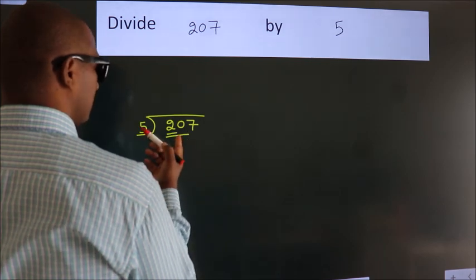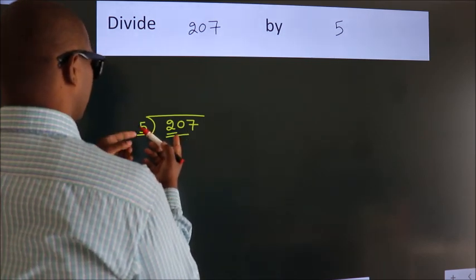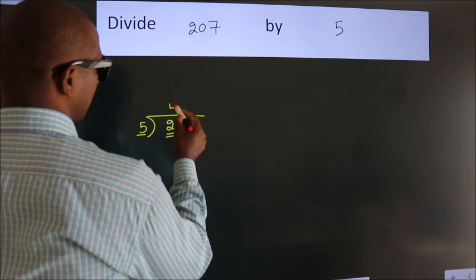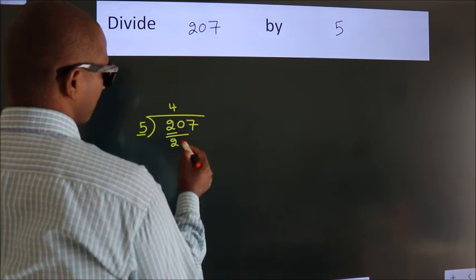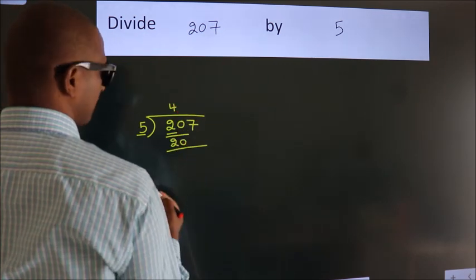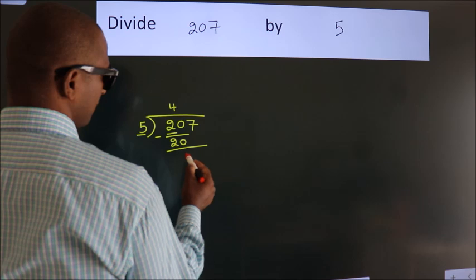When do we get 20? In 5 table. 5 fours, 20. Now we should subtract. We get 0.